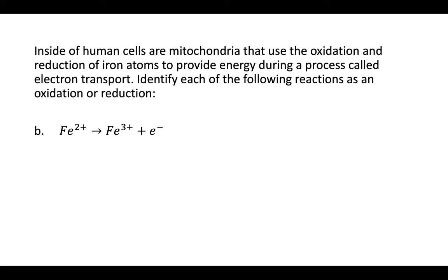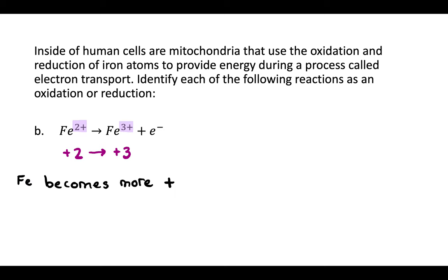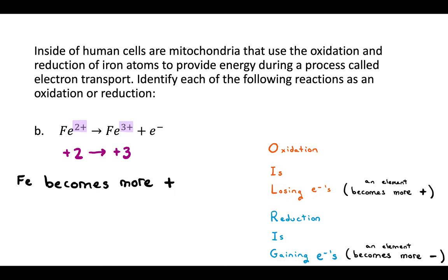In this example — something that also occurs in the electron transport chain — iron starts out with a plus two charge. As the reaction happens, as the electron pings around the pinball machine, iron ends up with a plus three charge. So iron goes from plus two to plus three — that means it becomes more positive. If an element becomes more positive, it's oxidized. So here, oxidation occurred.